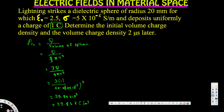Next, we have to calculate the volume charge density two microseconds later. To do that, we use the equation: rho_v equals rho_v0 times e to the power of negative t over t_r. Here, rho_v0 is the initial volume charge density we just calculated, t is two microseconds, and t_r is the relaxation time — which we still need to calculate first.